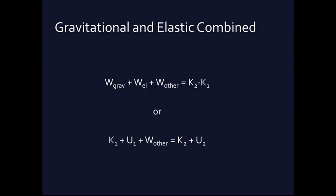Here's another way to put it that may make even more sense: the amount of kinetic energy something has at one point plus the amount of potential energy something has at one point plus whatever other work is being done—friction, air resistance, whatever it is—is going to equal the amount of kinetic energy it has at the second point plus the potential energy at the second point. Remembering that potential energy and work other can be negative.